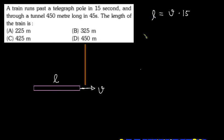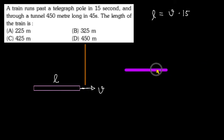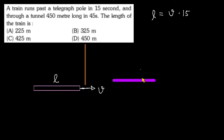Now let's talk about crossing the tunnel, 450 meters long. If we have to represent a tunnel, I will show it as a horizontal line. Suppose this is the tunnel — I will show it by a horizontal line. The tunnel is a little bit longer. After this, the train will cross the tunnel. Now let's analyze it — the train is crossing the tunnel.